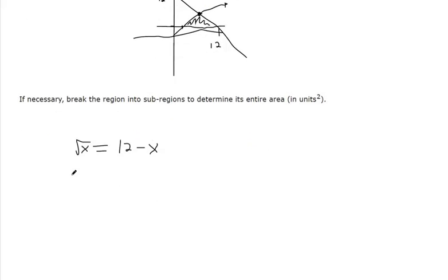To solve this equation, I'd square both sides, so that's 12 minus x squared, so that's 12 minus x times 12 minus x.